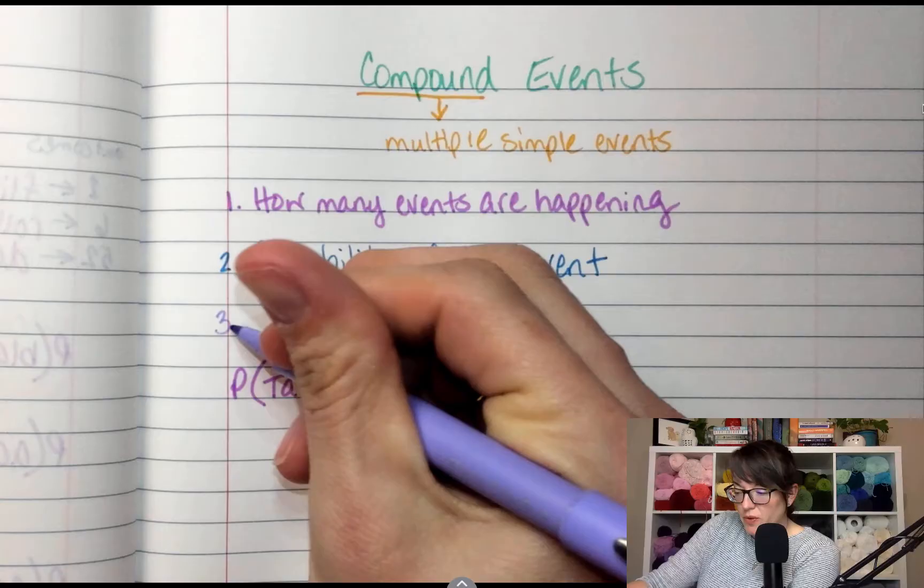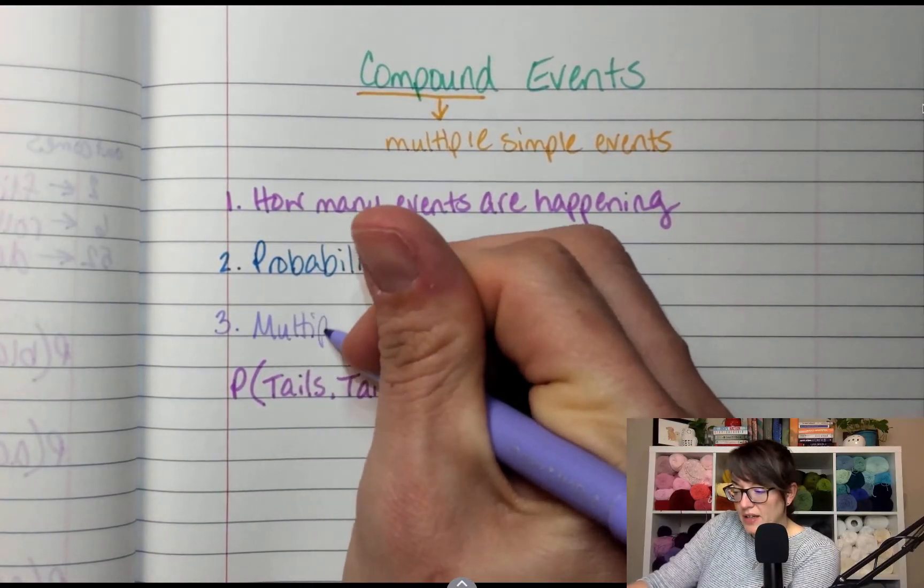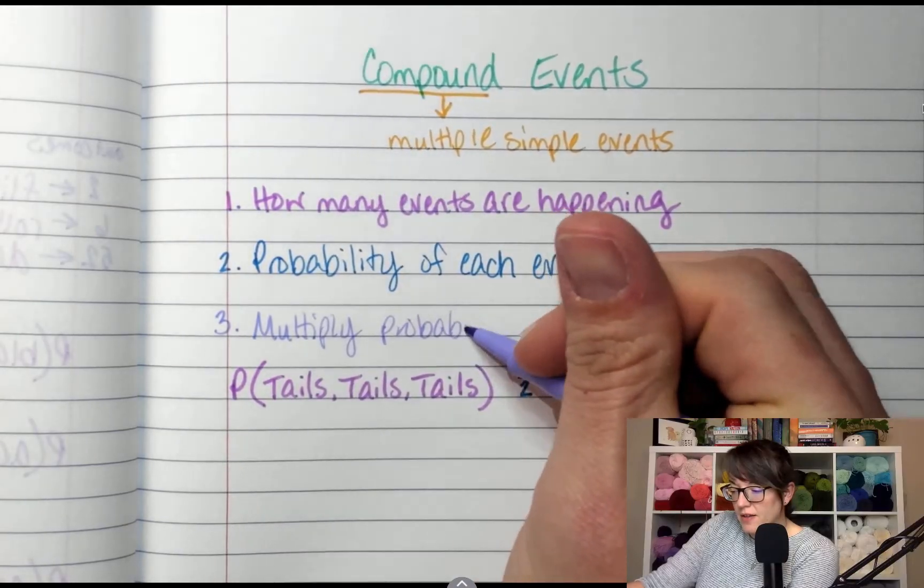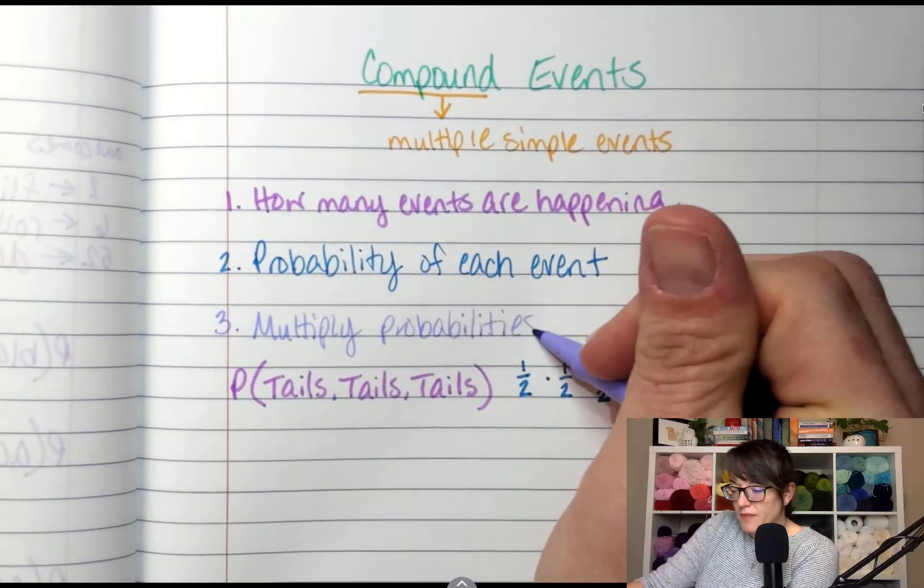So step three, I multiply probabilities together.